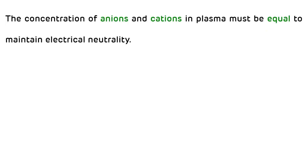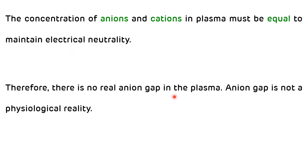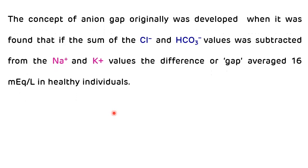The concentration of anions and cations in the plasma must be equal to maintain electrical neutrality. Therefore, there is no real anion gap in the plasma; anion gap is not a physiological reality. The concept of anion gap was first discovered when some of the chloride and bicarbonate values were subtracted from the sodium and cation values, and the difference discovered was 16 mEq/L in healthy individuals.